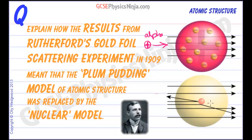So let's have a look at the experiment and then put it into words to show why these observations meant that we changed the plum pudding model into the nuclear model.